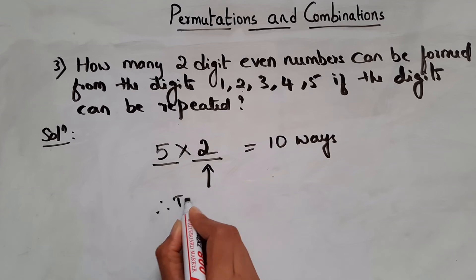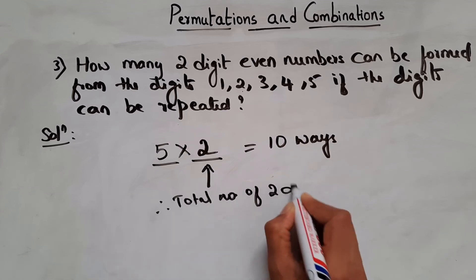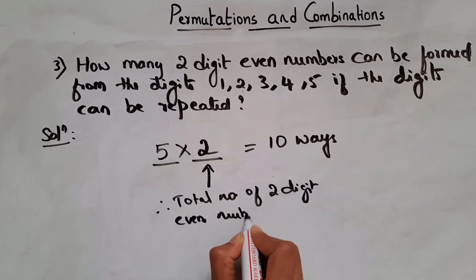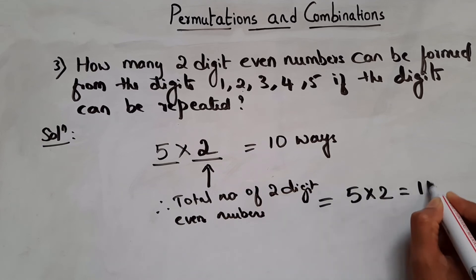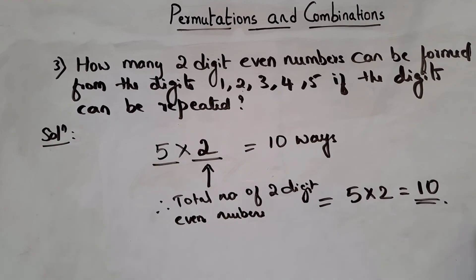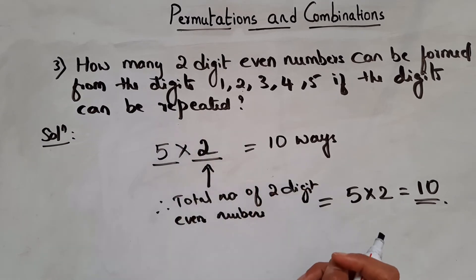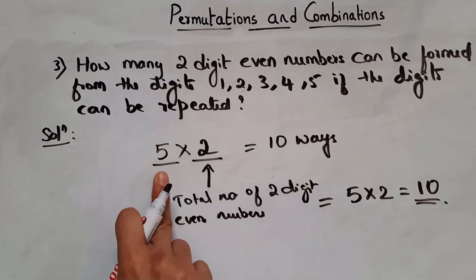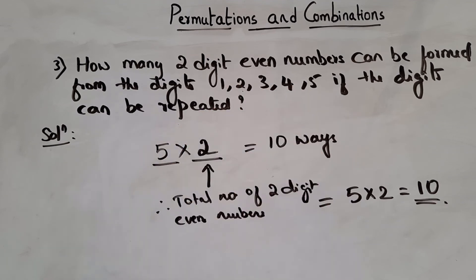So the total number of two-digit even numbers is 5 into 2, that is 10. Now if they were to say the digits cannot be repeated, then the tens place cannot include 2 or 4 — so only 1, 3, 5 remain, giving 3 ways. So then it would be 3 into 2, which is 6 ways.